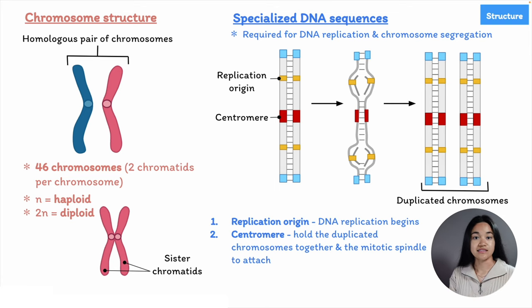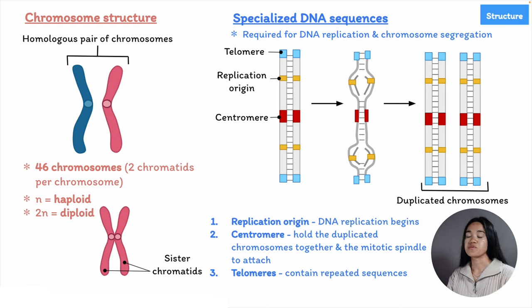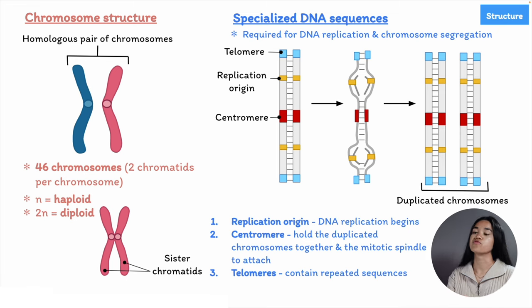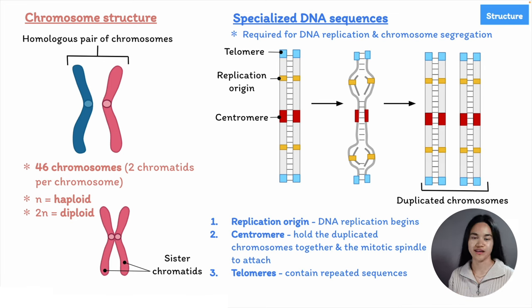The third specialized DNA sequences are the telomeres, which are the ends of a chromosome. Telomeres contain repeated sequences that are needed for the ends of a chromosome to be fully replicated. So these are the three specialized DNA sequences needed to produce a chromosome that can be replicated and then separated.